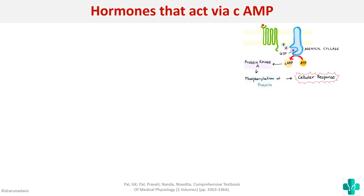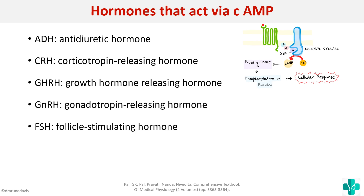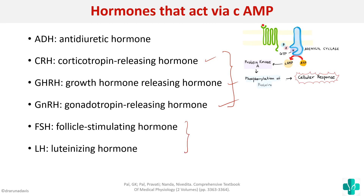The various hormones that act via cAMP include antidiuretic hormone, corticotropin releasing hormone, growth hormone releasing hormone, gonadotropin releasing hormone, follicle stimulating hormone, and luteinizing hormone. You can remember these as mainly three releasing hormones — CRH, GHRH, and GnRH — plus the two reproductive hormones FSH and LH, and antidiuretic hormone. We'll learn more about each in the respective systems.